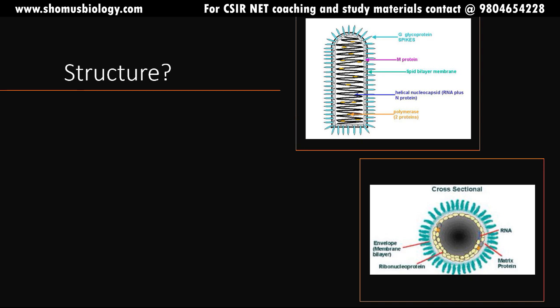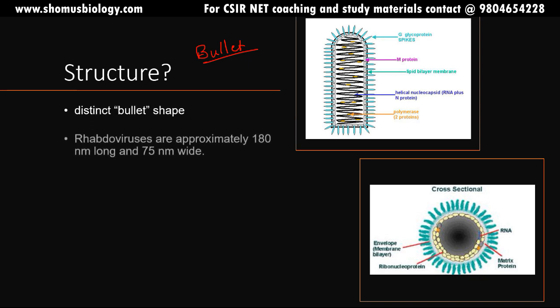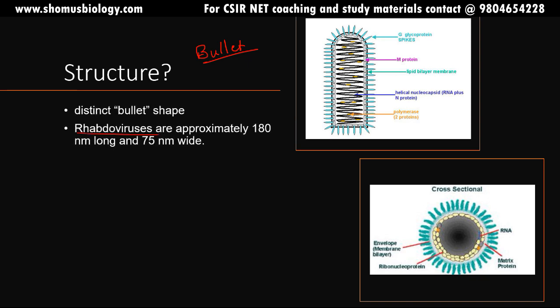Another thing that should be imprinted in your mind when you talk about rabies virus — one is dogs, and second is a bullet. Why? Because the virus looks like a bullet — it has a distinct bullet-shaped structure. They belong to the rhabdovirus family. The virus is approximately 180 nanometers long and 75 nanometers wide.